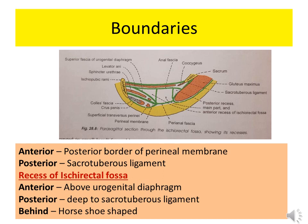Anteriorly, the boundary is the posterior border of the perineal membrane. The perineal membrane is the inferior fascia of the urogenital diaphragm — above is the levator ani forming the pelvic diaphragm, and below is the urogenital diaphragm covered by two fascia: the superior fascia above and the inferior fascia, also called the perineal membrane, below. Posteriorly, the boundary is the sacrotuberous ligament.